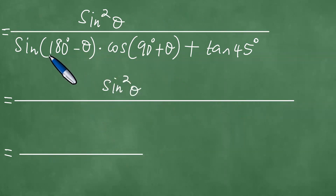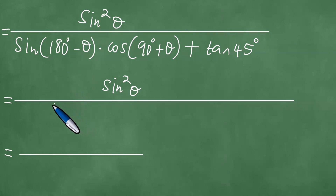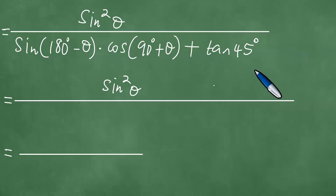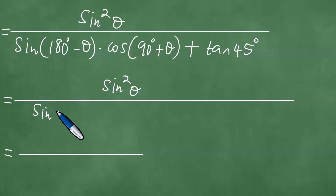In the denominator, you need to think of where each angle sits. 180 minus theta — in which quadrant is 180 minus theta? 180 minus theta is in the second quadrant. The second quadrant is one in which the sine function itself is positive, so you're going to have sine of theta.